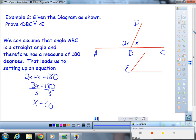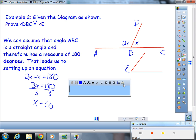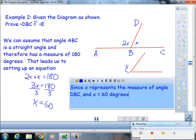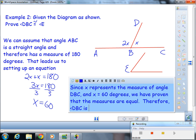So divide each side by 3, x equals 60. Now that I've done my math and showed my work step by step, I will resume my paragraph proof below. But instead of going below, I'm going to go over here to the side so that you guys can see it all. If you have to do something like this on your test or your homework, that's completely fine. Since x represents the measure of angle DBC, and x equals 60 degrees, we have proven that the measures are equal. Therefore, angle DBC is congruent to angle E.